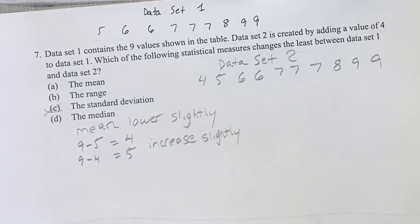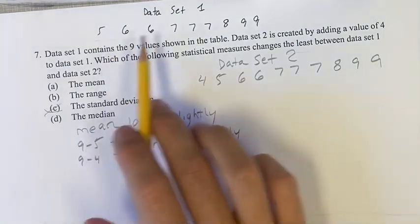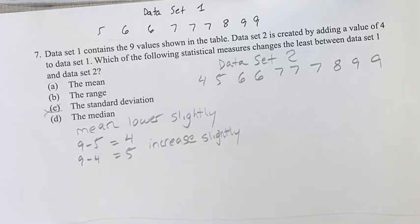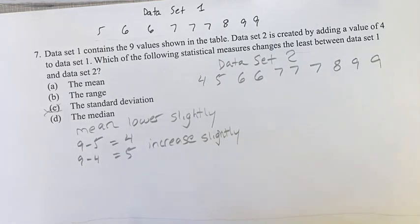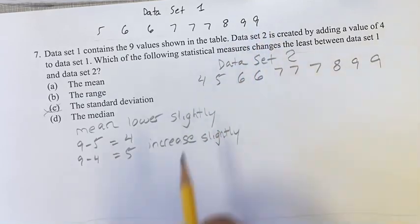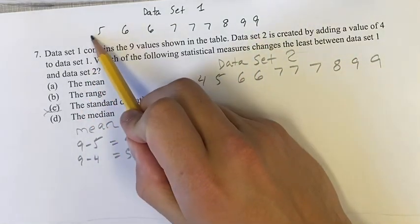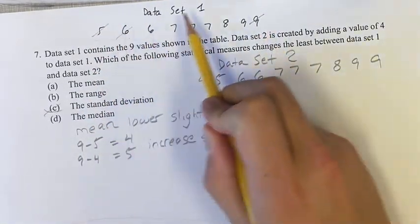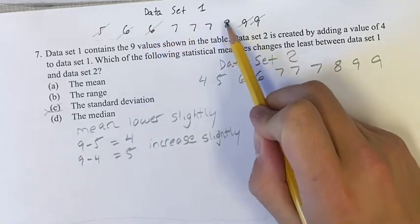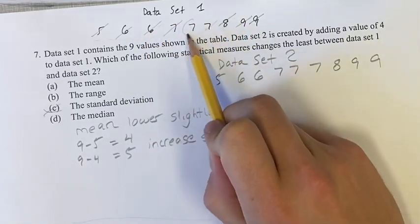The median is something where if you're going from an odd number to an even number, it might not actually change. I'll show you what that means. We take the median, and since these are all listed in a row, we take one off of each side. Going down, we end on a 7.